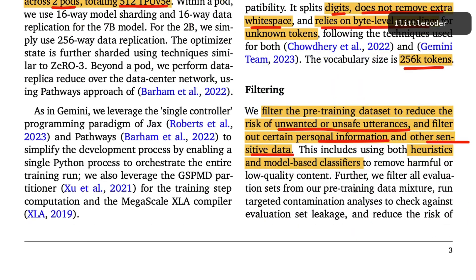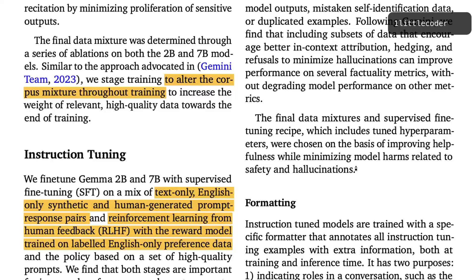They're not specific about what personal information was excluded, but it typically includes names, phone numbers, emails — what's called PII, personally identifiable information. They used both heuristics — rule-based approaches — and model-based classifiers to identify and remove unsafe content, to improve overall data quality.